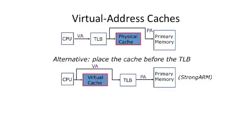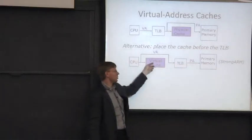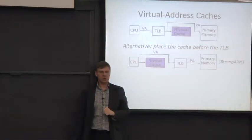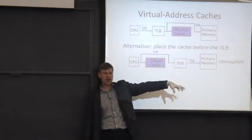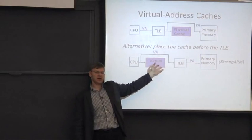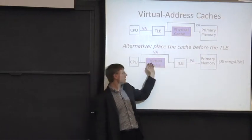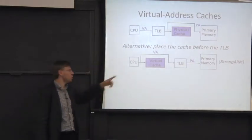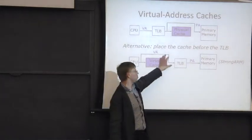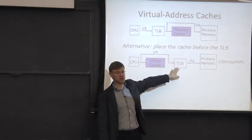What this means is the addresses that go into our cache are virtual addresses, and this has some pretty big implications. Lots of processors are doing this these days, putting the TLB in parallel with the cache. If the cache is completely virtually indexed and virtually tagged, you only go fire up the TLB when you take a cache miss.